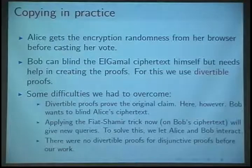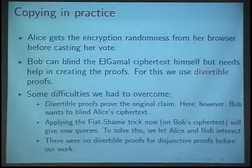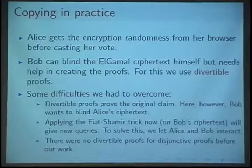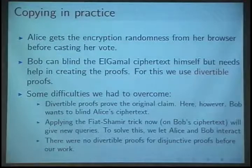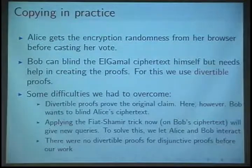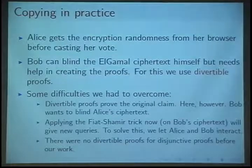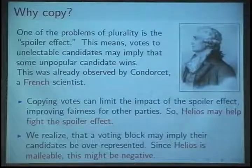However, this time Bob wants to blind the ciphertext. The second thing is that we have the Fiat-Shamir heuristic, which gives you the challenges, but now the ciphertext has been changed, so we have to take care of that. And there were no divertible proofs for disjunctive proofs, and that's actually what's being used in Helios, so we had to deal with that.